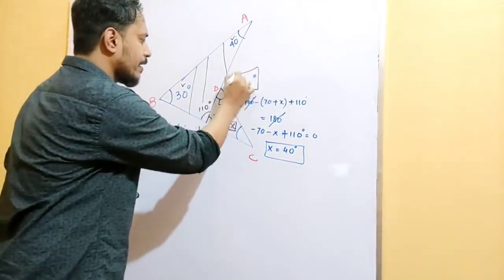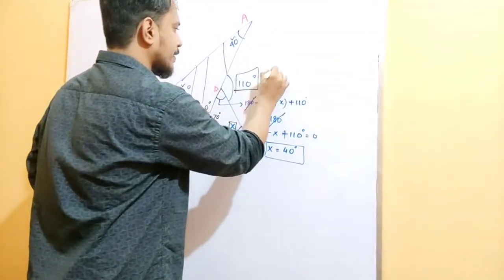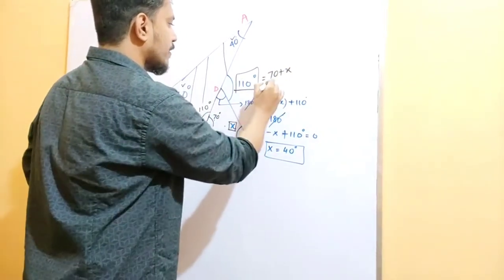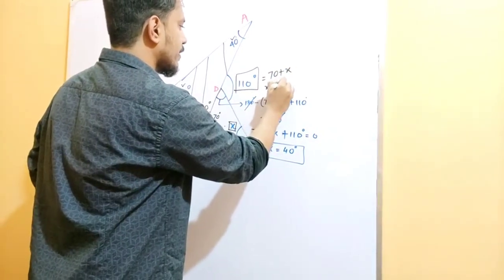180 degree minus 70 plus X. If you solve this equation, you can say that X equals to 40.